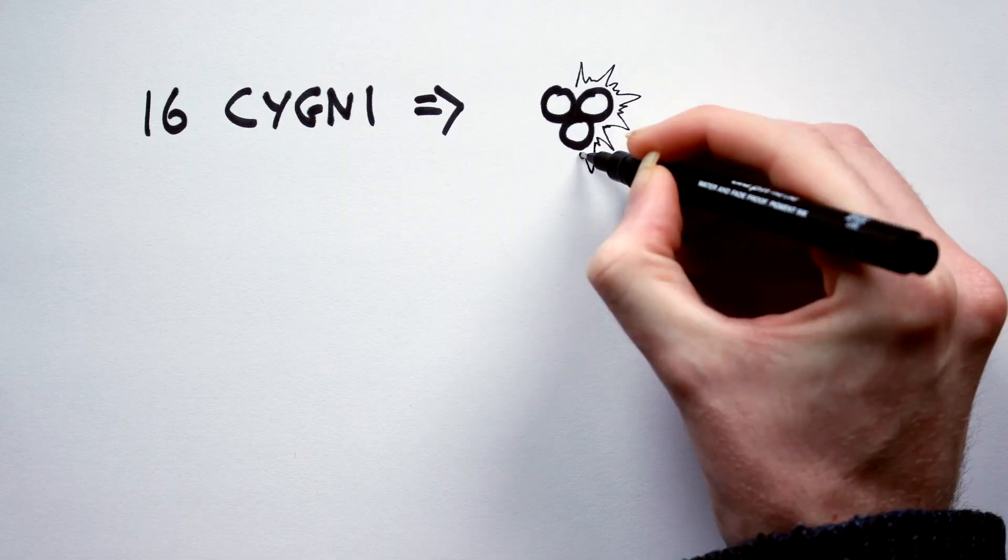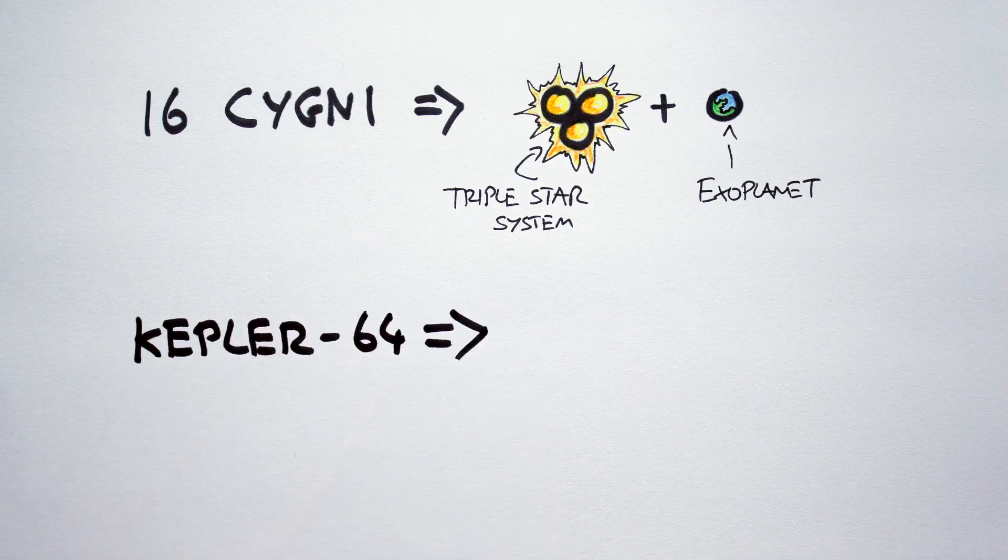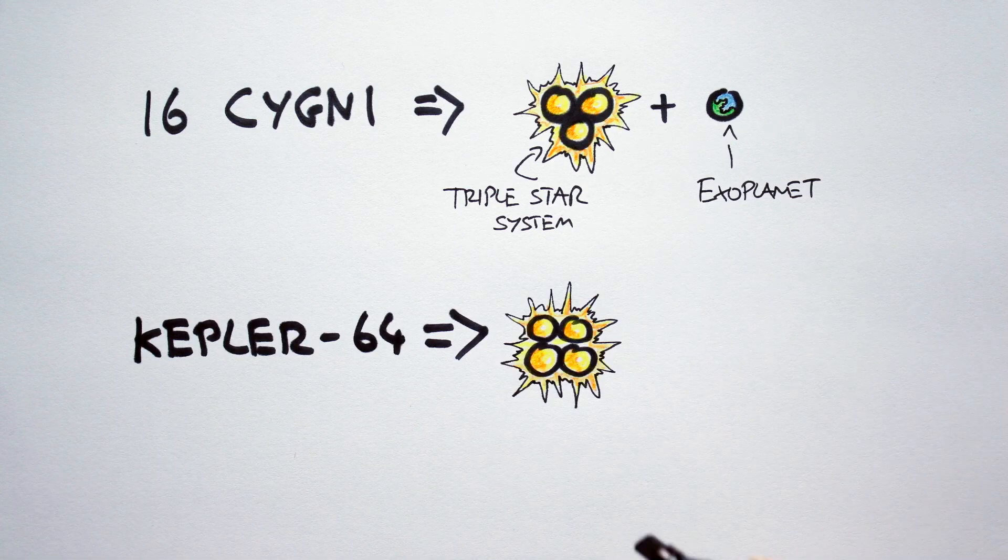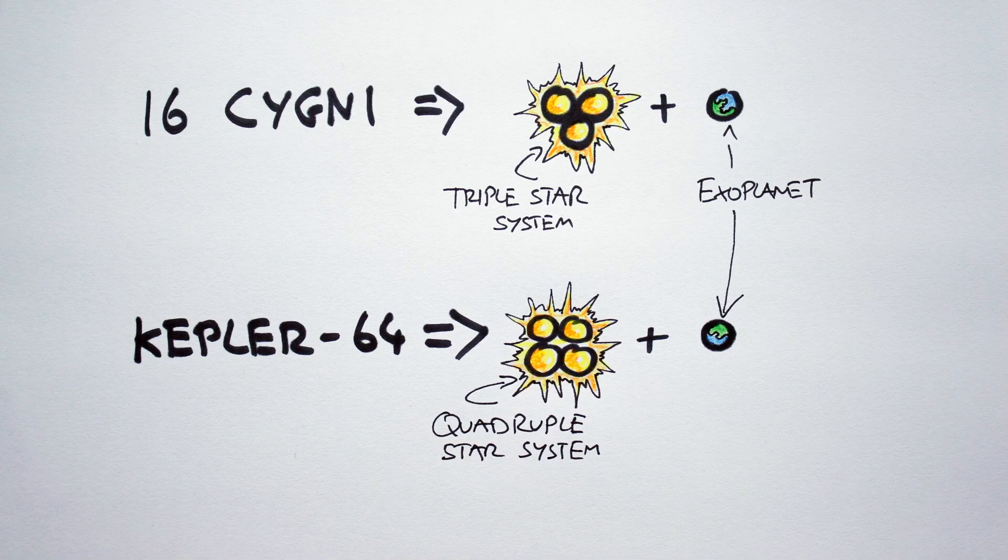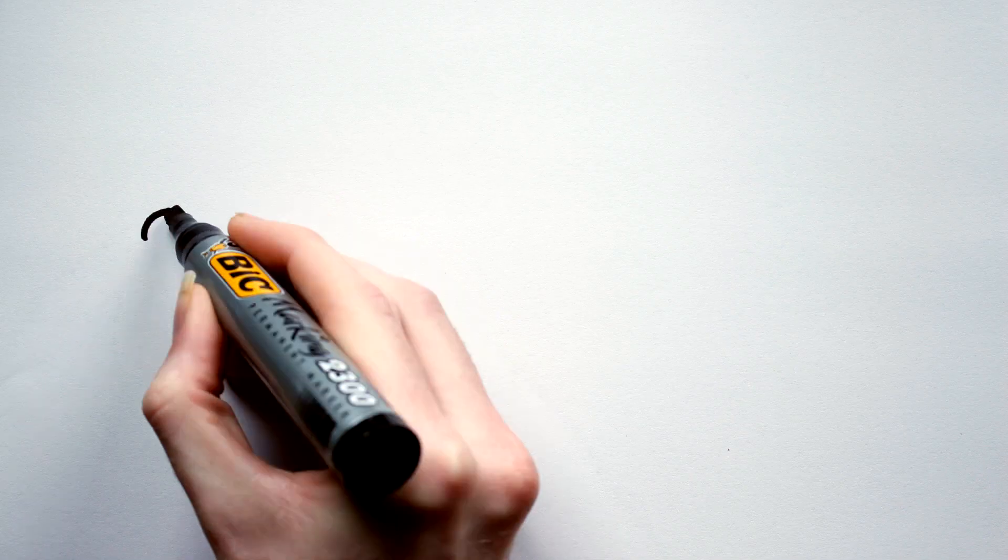Like for example, 16 Cygni, a triple star system that hosts a single planet. Or Kepler 64, a planet hosting quadruple star system. So far though, no star systems containing five or more stars have been found to host exoplanets.